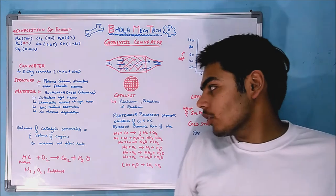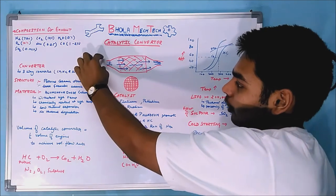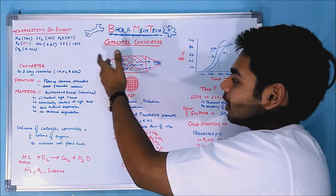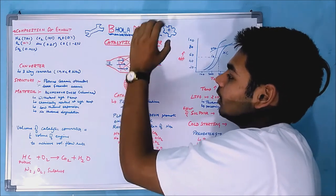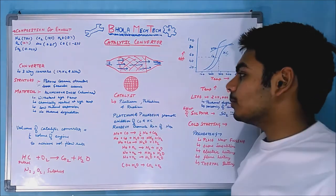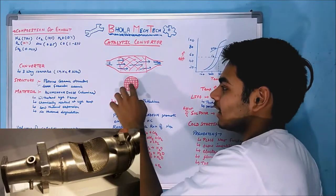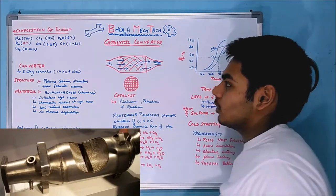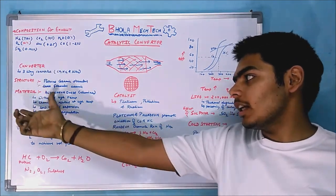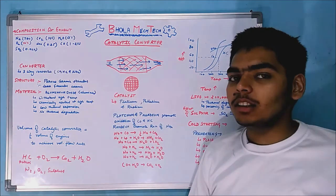This is the basic diagram of the catalytic converter. One end is connected to the engine exhaust manifold, where exhaust gases enter. The porous ceramic structure in the middle is where the exhaust gases pass through, and the other end leads toward the silencer. Looking from the side, you can see a mesh-like structure with pores through which the gases pass.